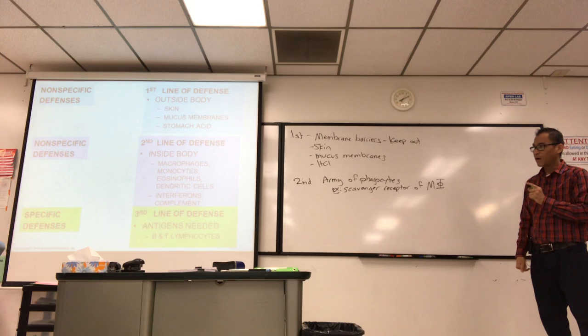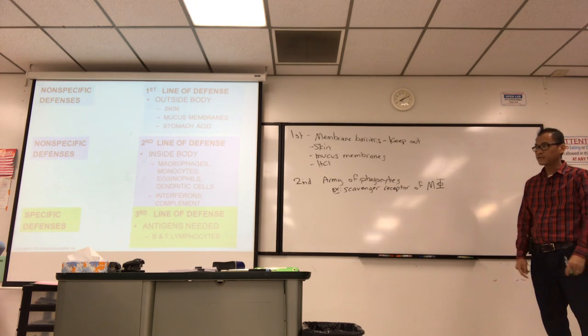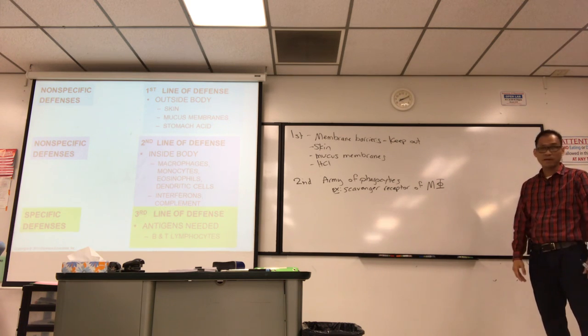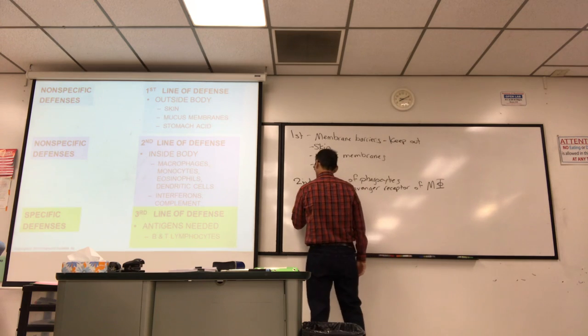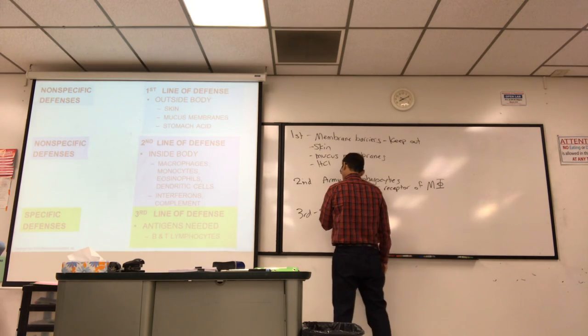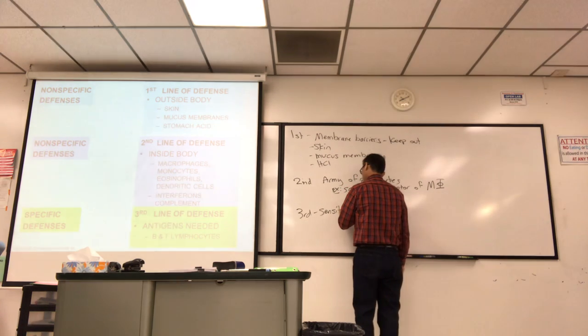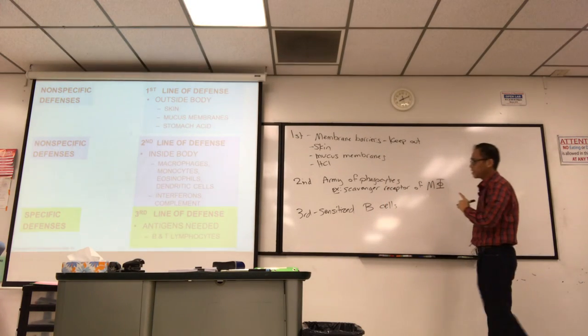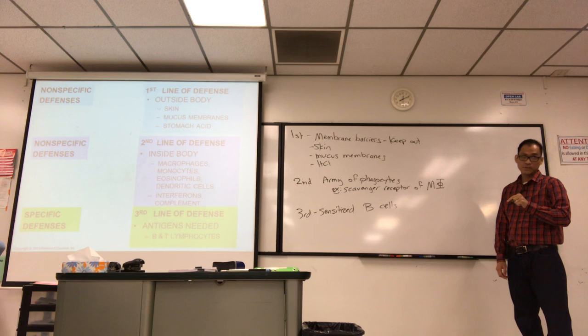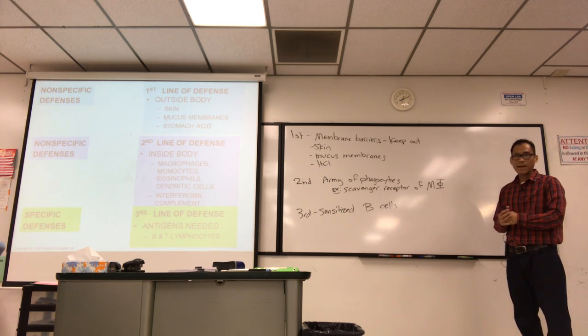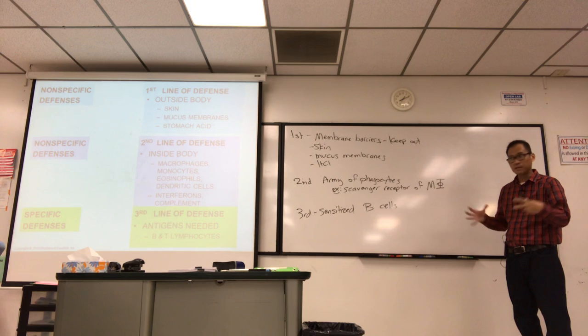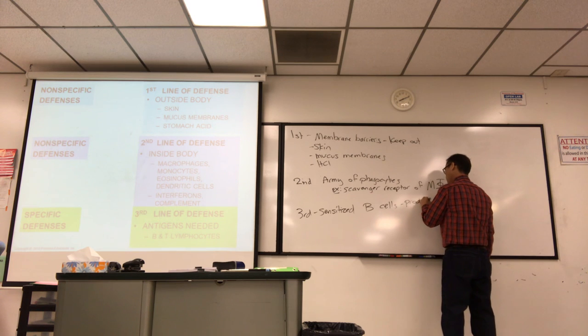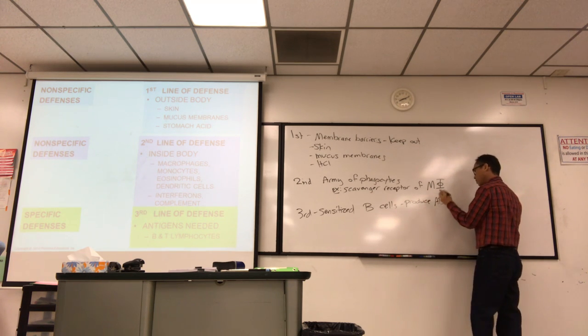And the third line of defense are, like I said before, your sensitized lymphocytes, the B and T cells, mounting a defense for you against a particular bug that is recognized. The B cells, they're your antibody producers. The antibodies are the simplest ammunition of the immune system.